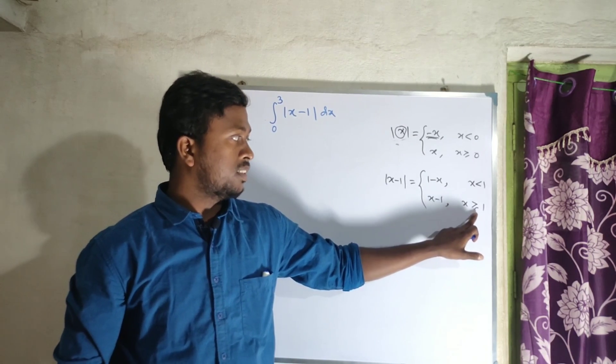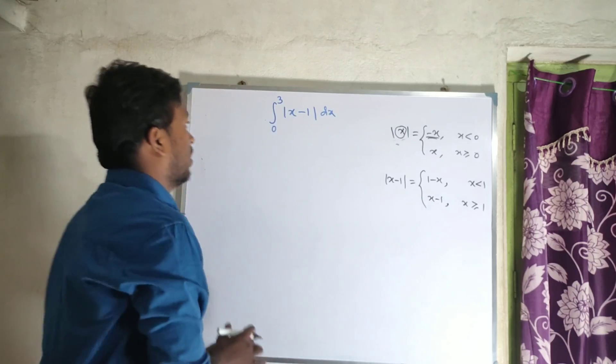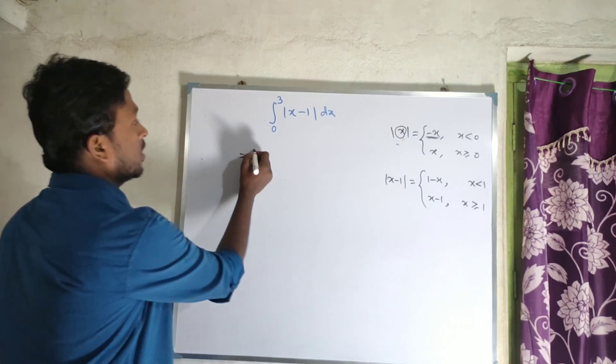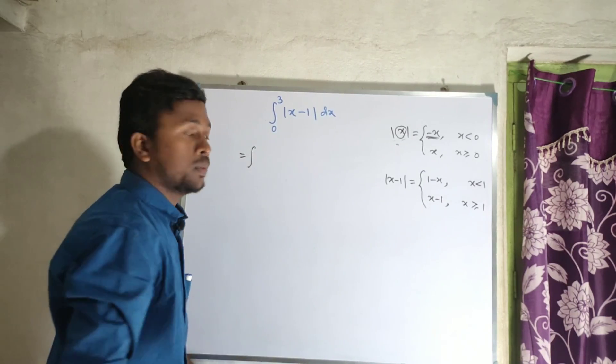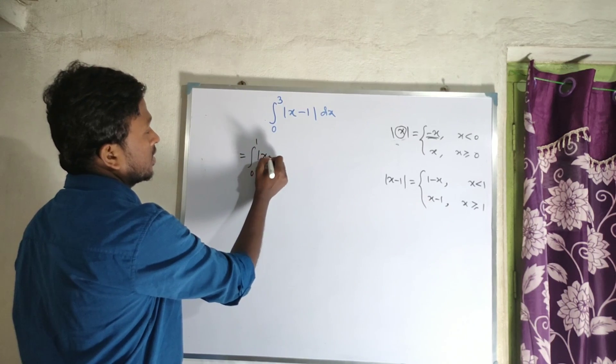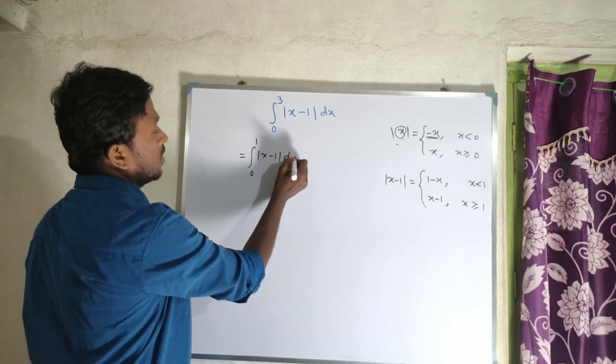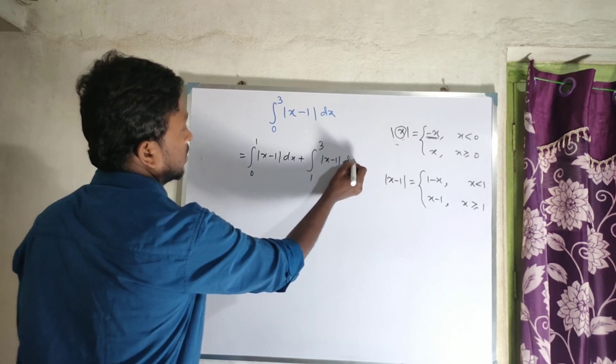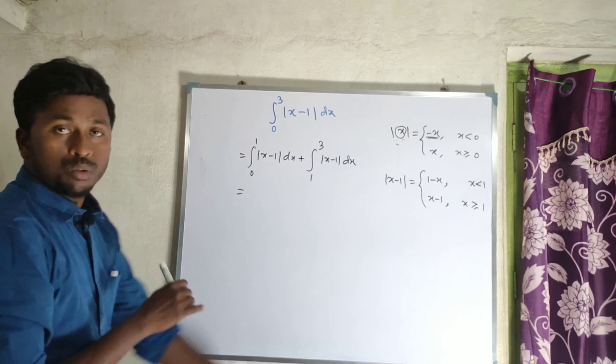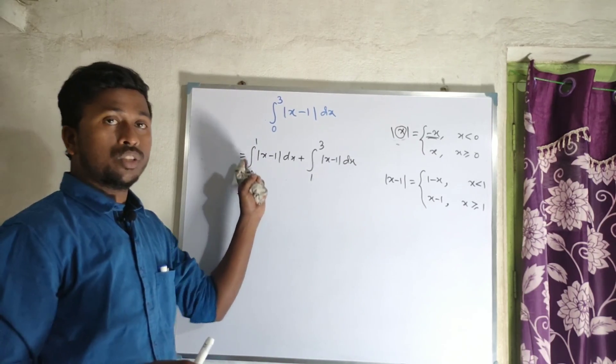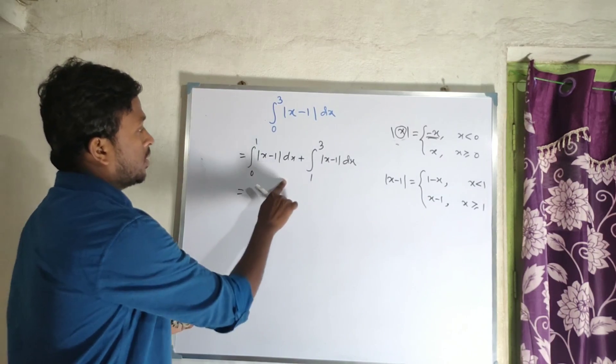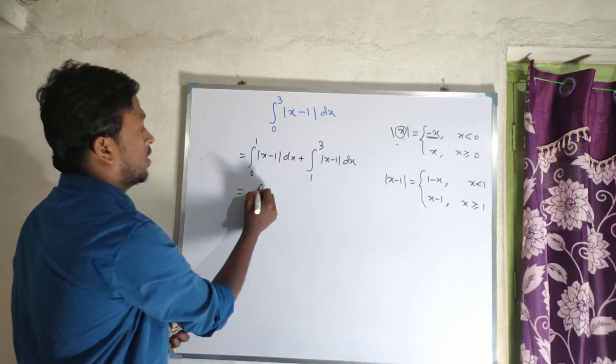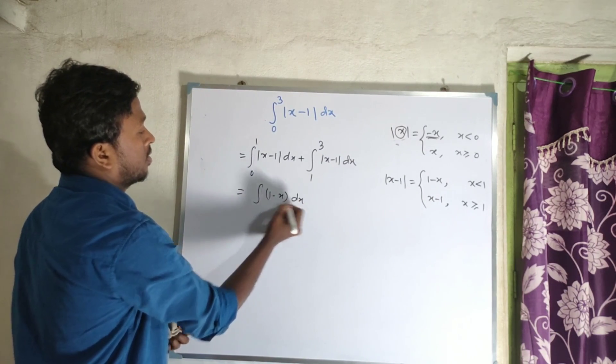Now I can split the integral. Integration from 0 to 3 of mod x minus one dx equals integration from 0 to 1 of mod x minus one dx plus integration from 1 to 3 of x minus one dx. By the definition, for values zero to one, mod of x minus one equals one minus x.